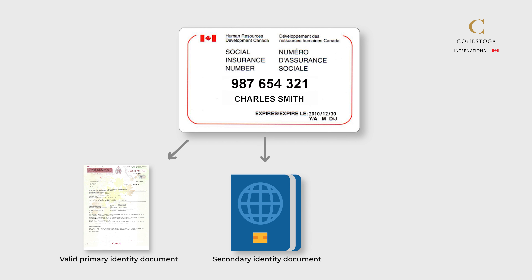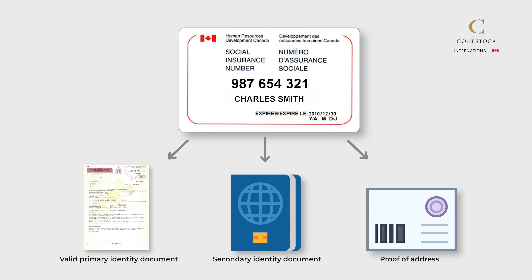Number two: a secondary identity document to confirm your identity, such as a passport, Canadian provincial ID card, or driver's license. Number three: proof of address.